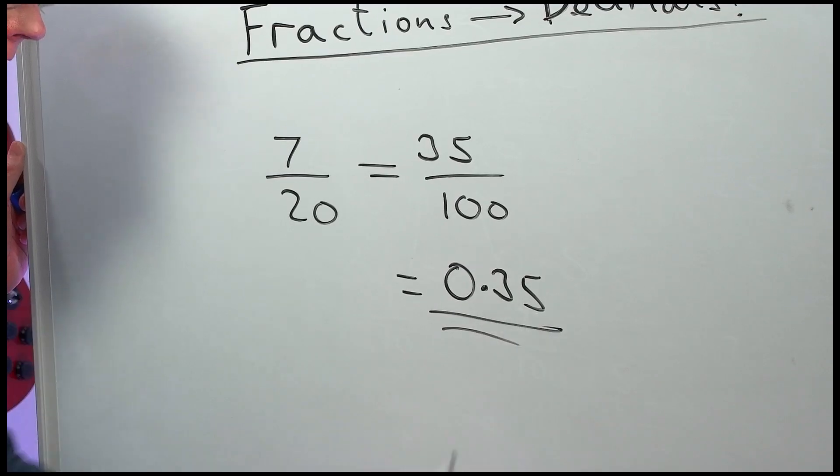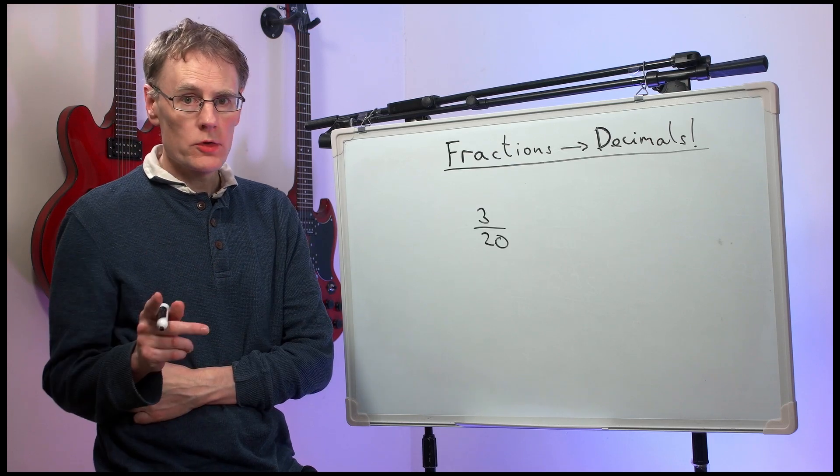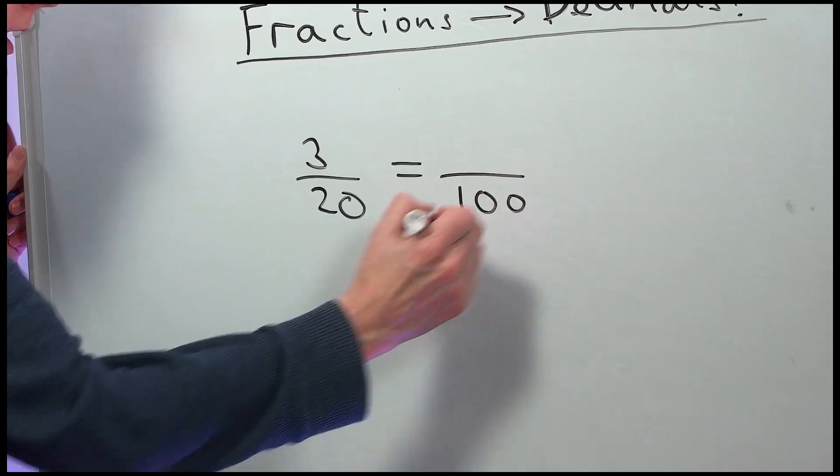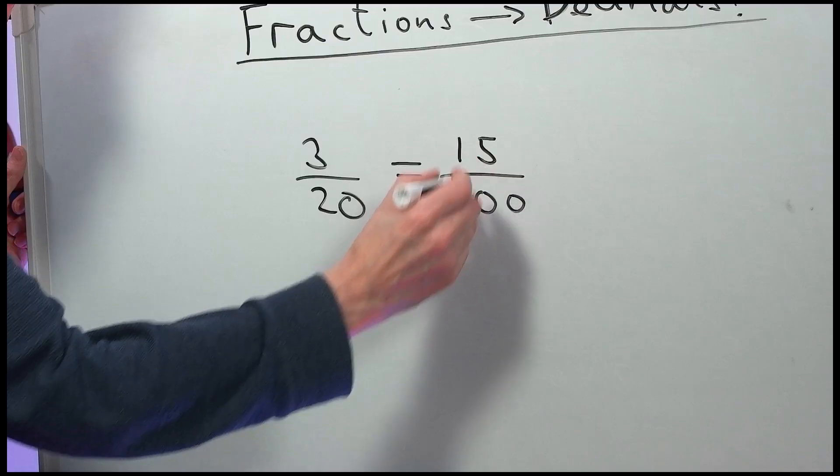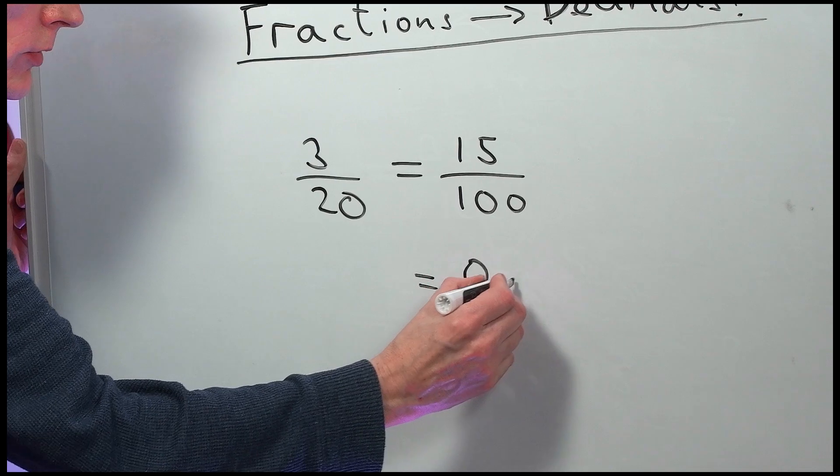There's thirty-five hundredths. Now, look at this one, three-twentieths. We can also change that to be out of a hundred. Here, we're multiplying the bottom by five. Three-fives are fifteen. Fifteen-hundredths is 0.15.